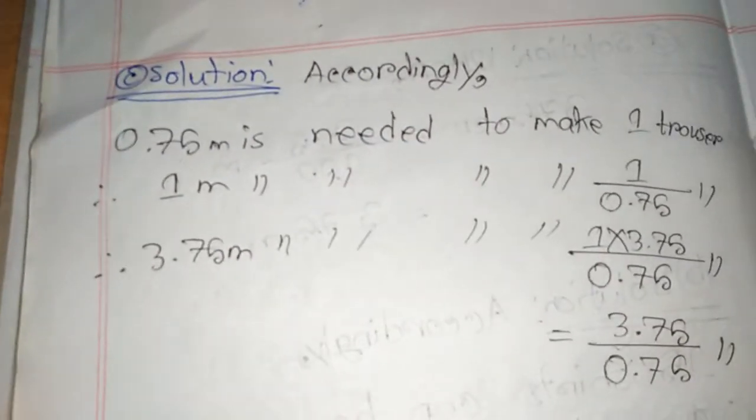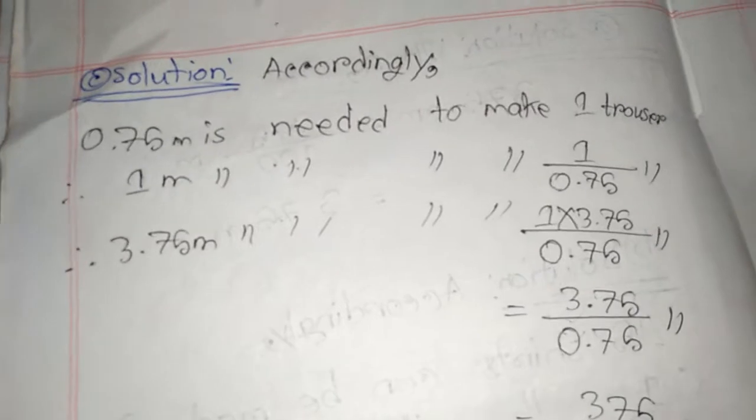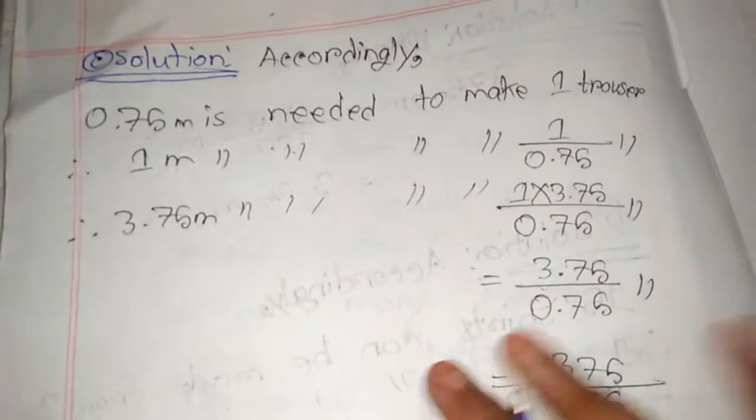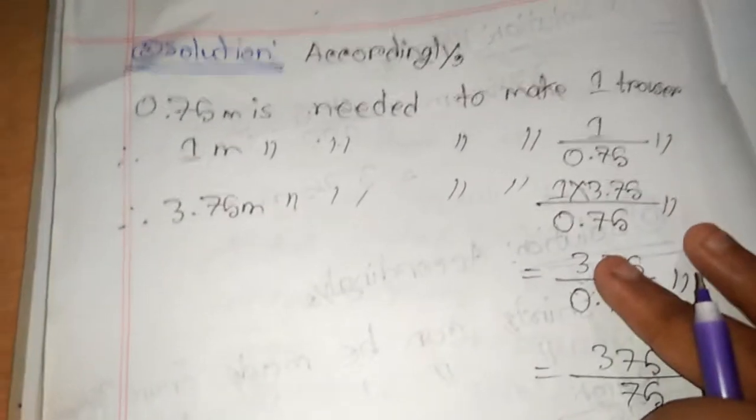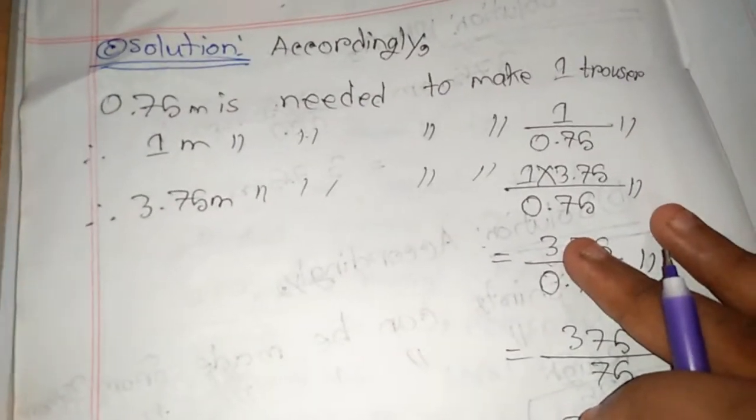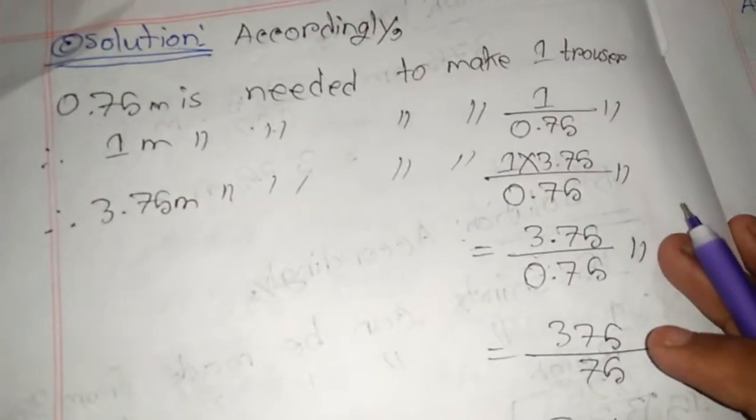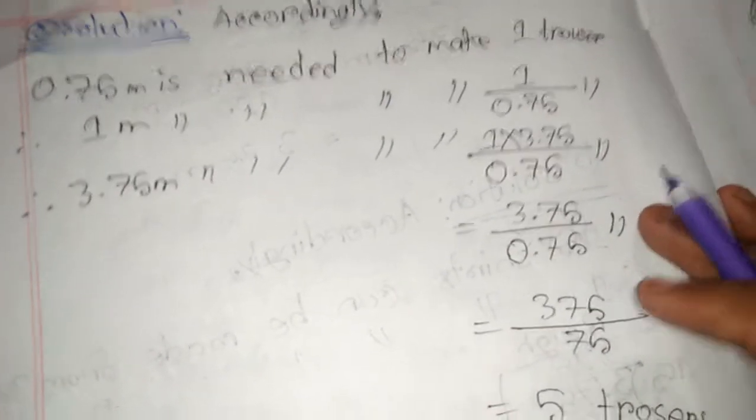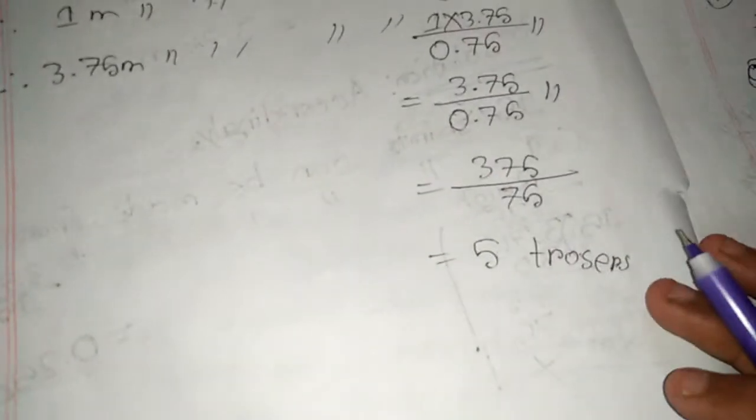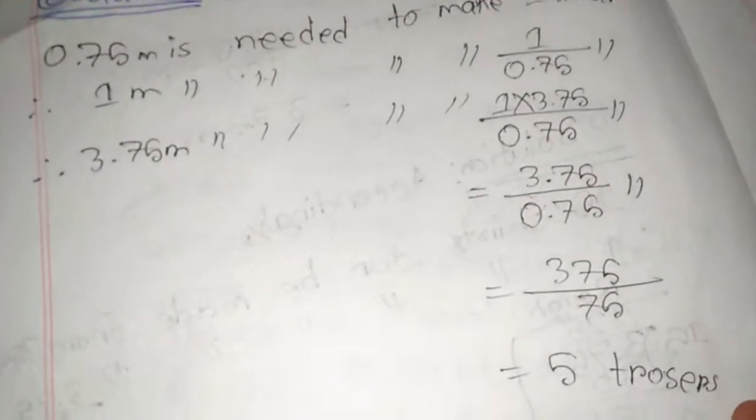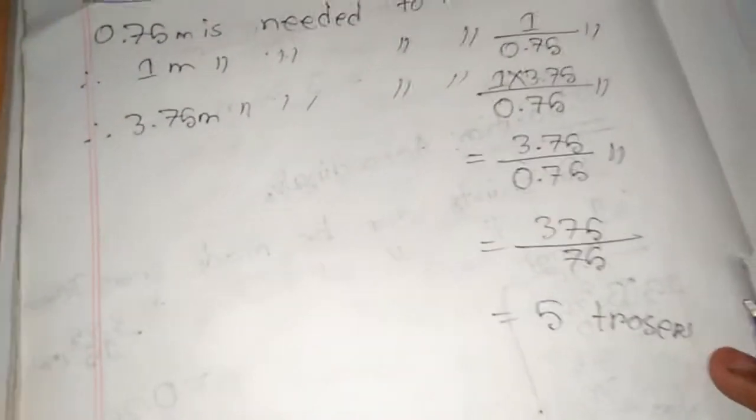0.75 meter is needed to make one trouser, so 1 meter is needed to make 1 divided by 0.75 trousers. Therefore, 3.75 meters is needed to make 3.75 divided by 0.75 trousers. After doing the calculation, we got 5. So with 3.75 meters, we can make 5 trousers.